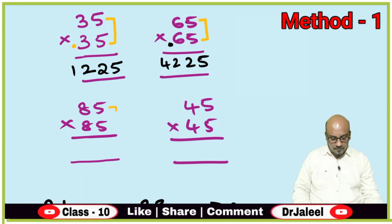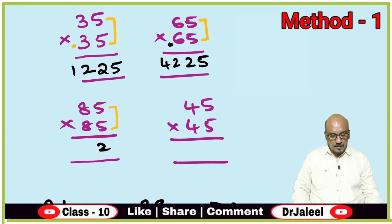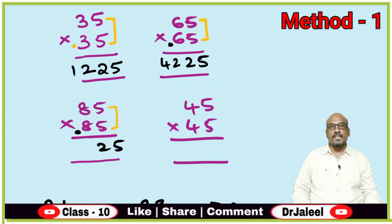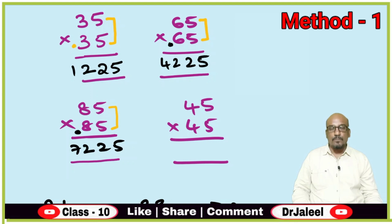Let us go for one more example. 5 into 5 — what is 5 into 5? 25. Here there is 8; you increase 1 to get 9. 9 into 8 is 72. So the answer is 7225.